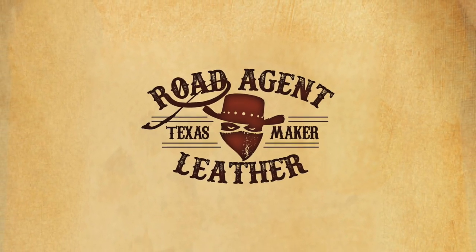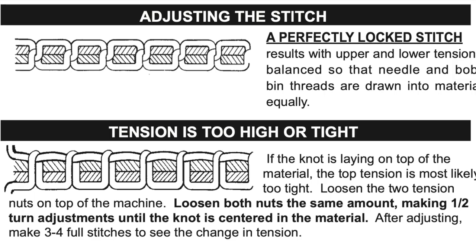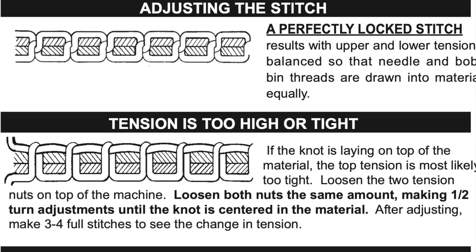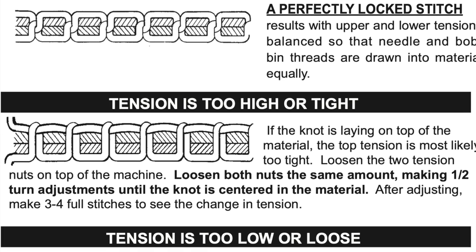It's a simple concept. When everything is working right, both the top and bottom thread tensioners on the boss are balanced. This leaves the knot hidden in the center of your workpiece.